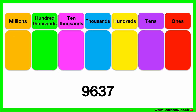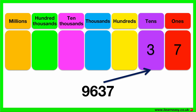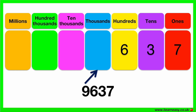Here is a four-digit number. We can put the different digits in their place values, and this will help us to identify how to read the number. The number 7 goes in the ones group, the number 3 goes in the tens group, the number 6 goes in the hundreds group, and the number 9 goes in the thousands group. So this number is 9,637.